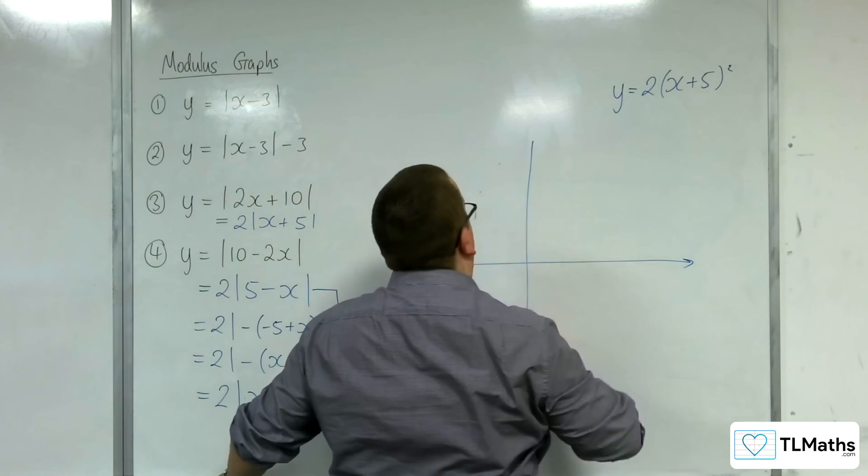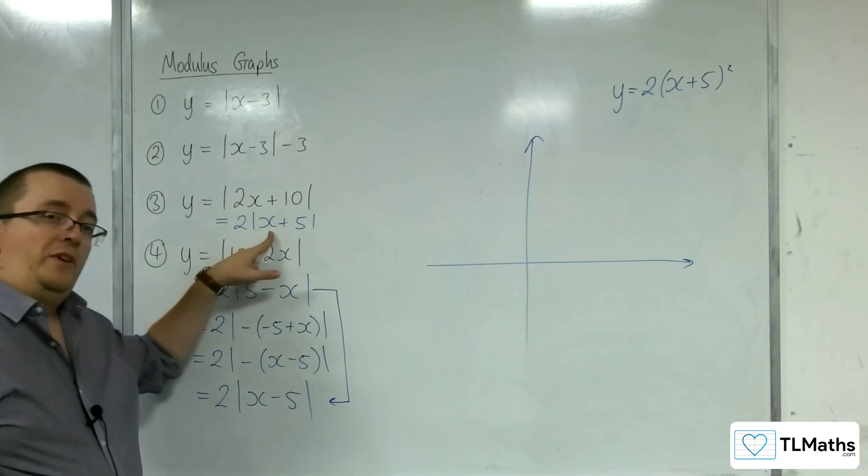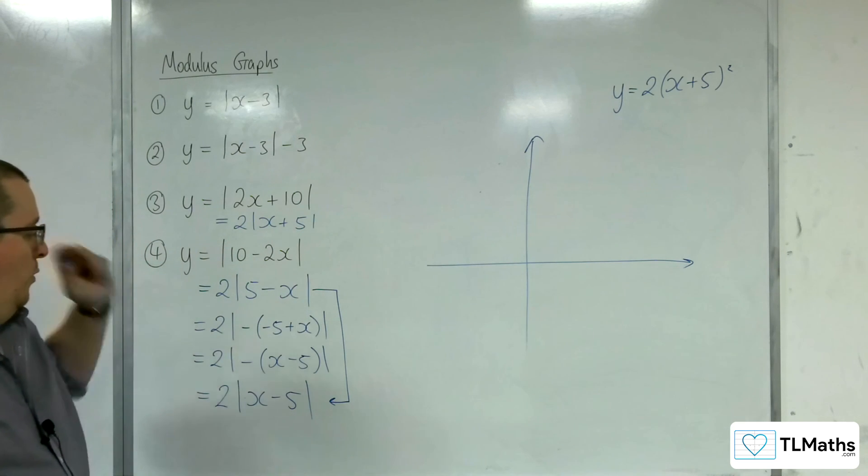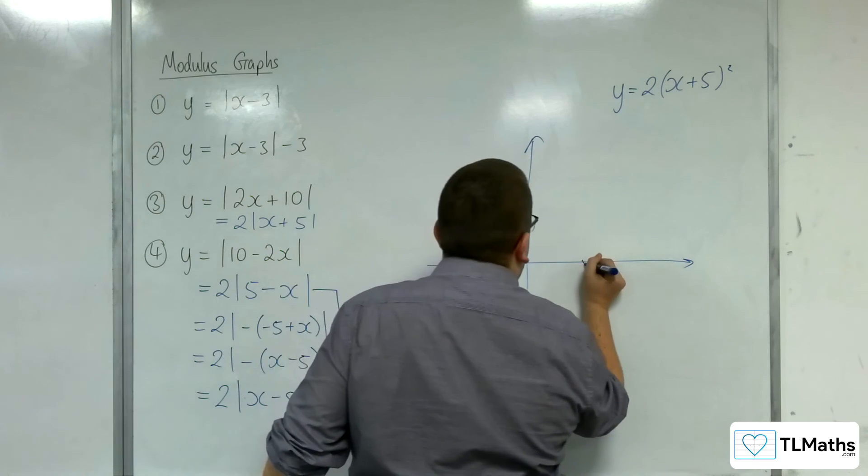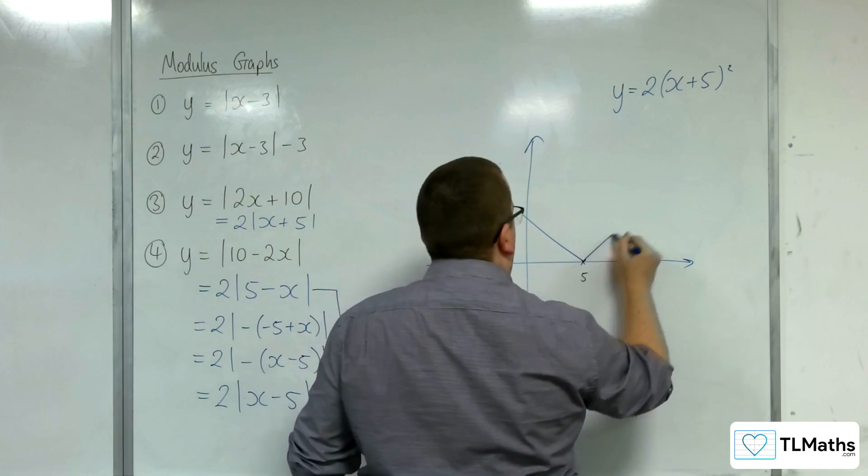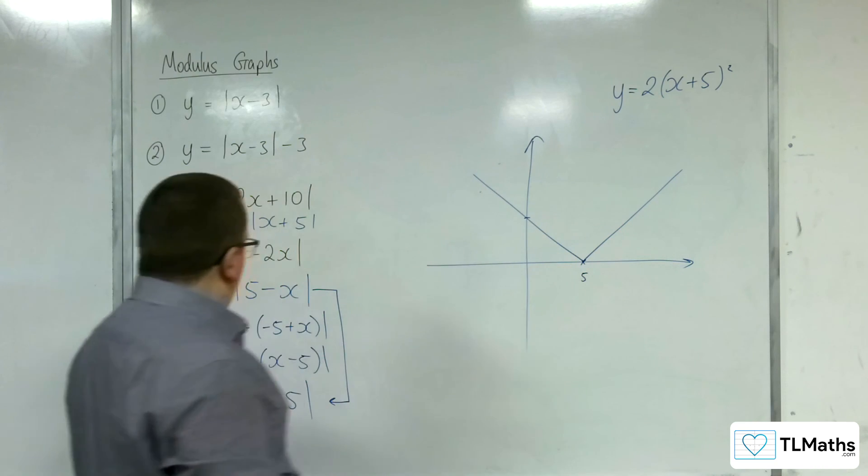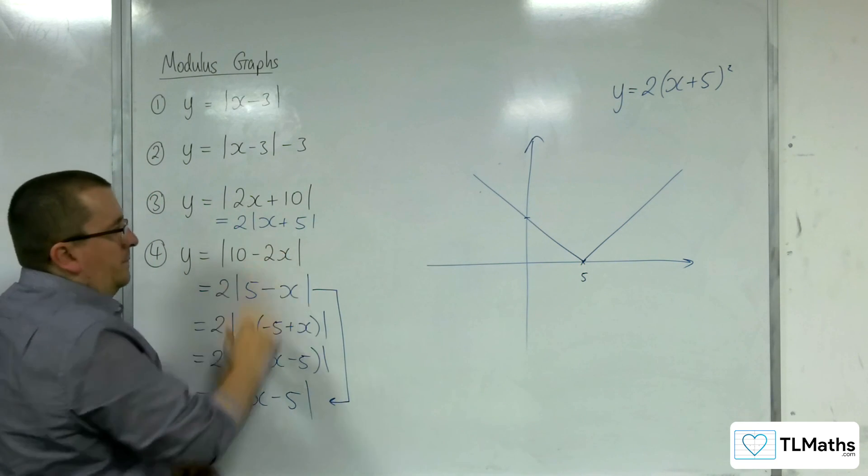So, let's jump into the sketch, because now we've got it in this format. It's just as easy as it was up here. So the vertex here is at (5, 0). There's 5. There's my graph. And when x is 0, I get the modulus of 10, which is 10.